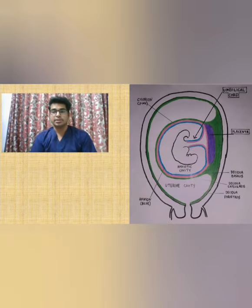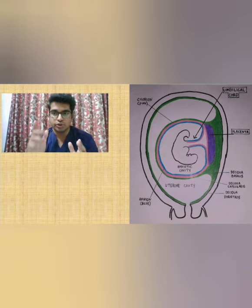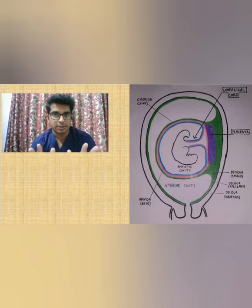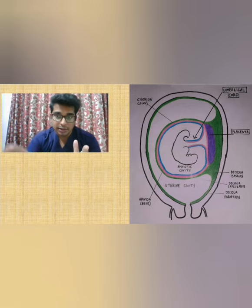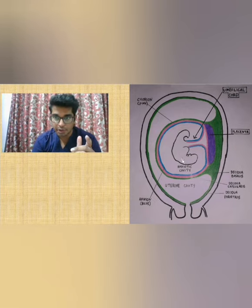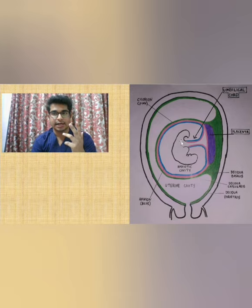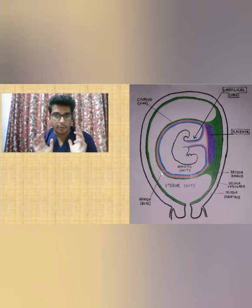Here is a diagrammatic representation of a gravid uterus with a growing fetus inside. You can clearly see that the fetus is connected to the placenta through an umbilical cord. For today, we will be concerned with only the gastrointestinal system. There is a developing gastrointestinal tract which is divided into three parts: the foregut, midgut, and the hindgut.